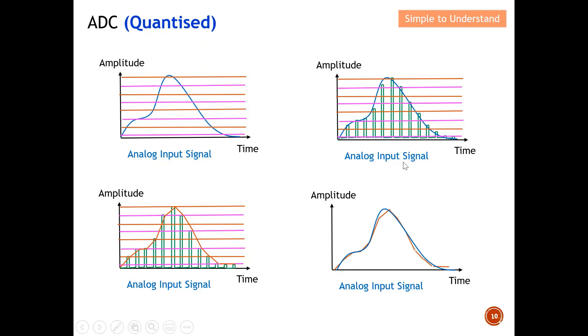In this video, I have discussed sampling — how many samples are needed to sufficiently represent the analog signal — and the number of bits, where increasing the number of bits allows a more accurate representation of the original signal. Please tap to like and subscribe. Once again, sincere thanks for your strong support. See you.